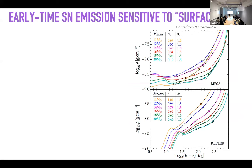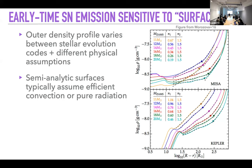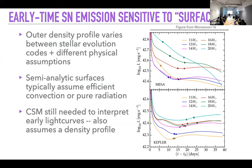While still assuming stars are spheres, different assumptions about the outer boundary of your 1D simulation — Kepler versus MESA — give different density structures, and the slope of the outer density profile varies depending on physical assumptions. Whether you assume pure radiation transport dominates or maximally efficient convection, you get a different density profile — and reality might be somewhere in between. Even then, you often still need circumstellar material to interpret these early light curves.